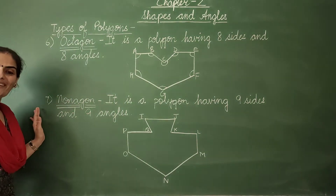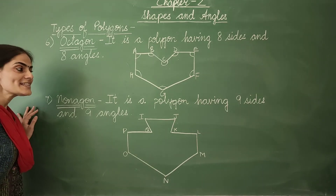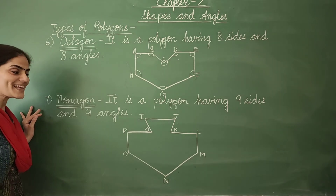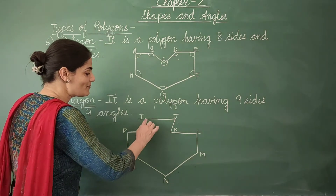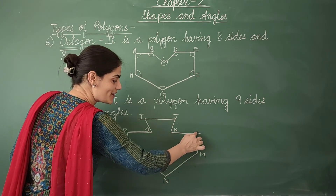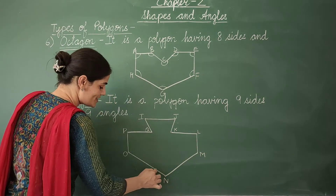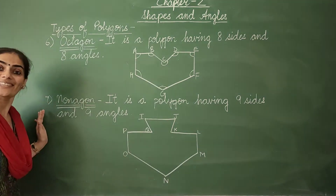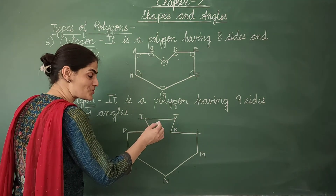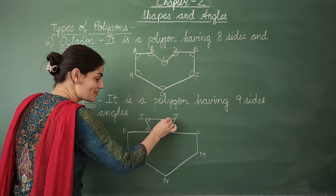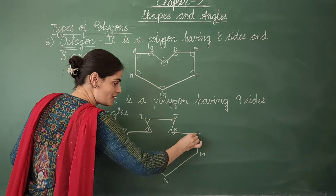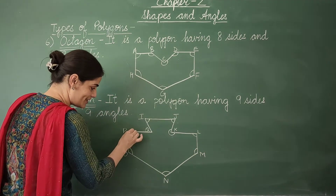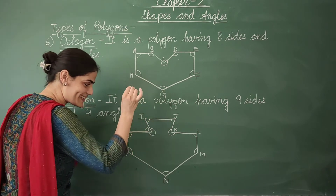The next type of polygon is a nonagon. It is a polygon having nine sides and nine angles. Let's count its sides — one through nine. It has nine sides, and counting its angles gives one through nine — nine angles as well.